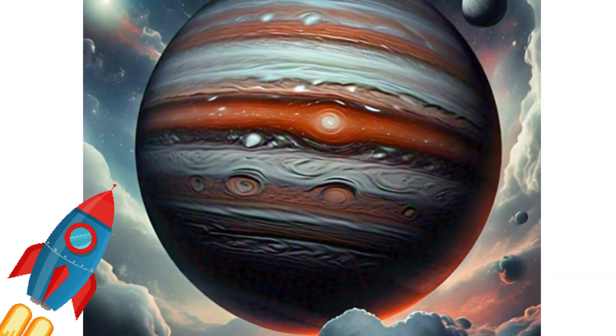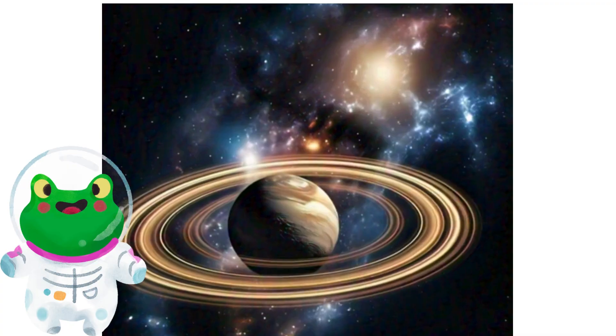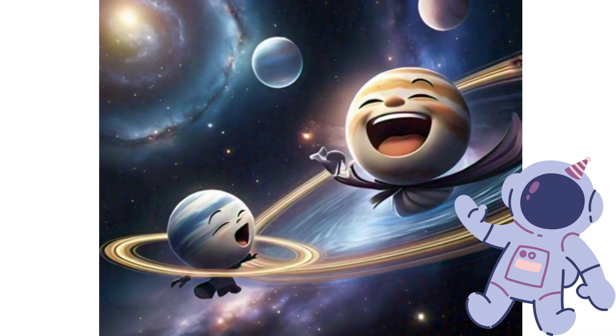Now Jupiter, so big and round, with swirling storms that spin around. Then comes Saturn, rings so wide. It twirls and dances side to side.